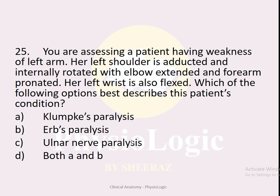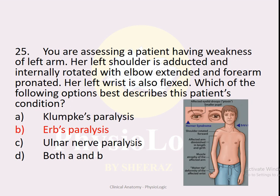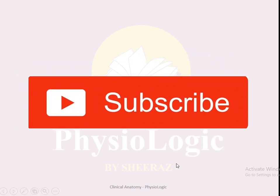MCQ number twenty-five: A patient has weakness of the left arm — the shoulder is adducted and internally rotated, elbow extended, forearm pronated, and wrist flexed. Options: A — Klumpke's paralysis, B — Erb's paralysis, C — ulnar nerve paralysis, D — both A and B. The correct option is B — Erb's paralysis, which results in this posture, also known as policeman's hand or waiter's tip posture.